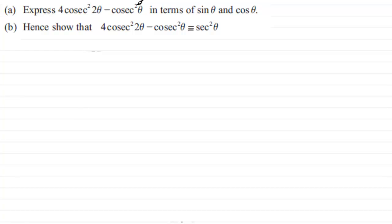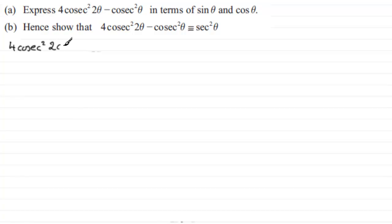In the first part of this question we've got to express 4cosec²2θ − cosec²θ in terms of sinθ and cosθ. Then it says hence show that 4cosec²2θ − cosec²θ is identical to sec²θ. So let's start with the first part: we've got 4cosec²2θ − cosec²θ and we've got to express this in terms of sinθ and cosθ.